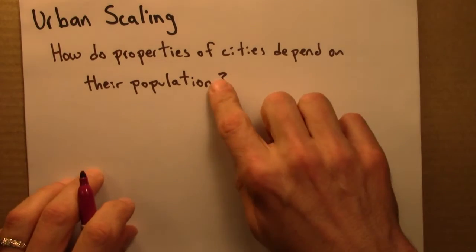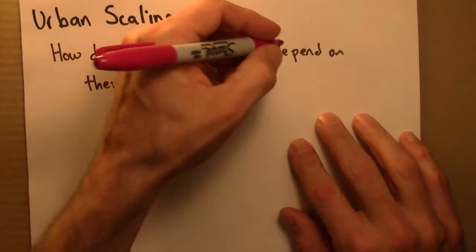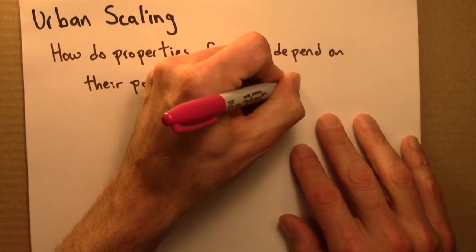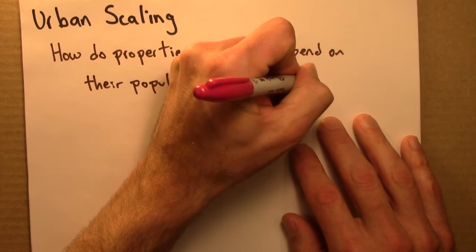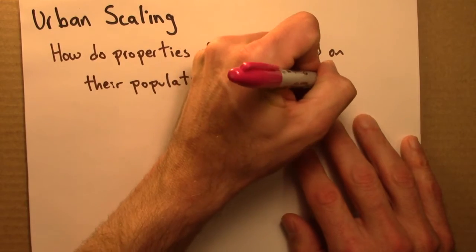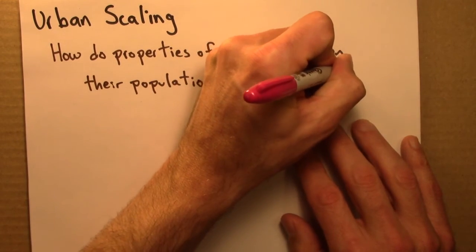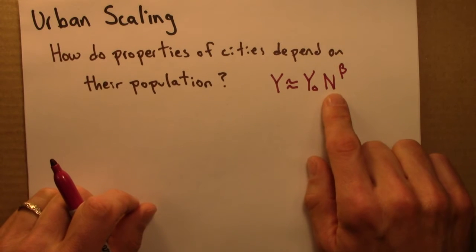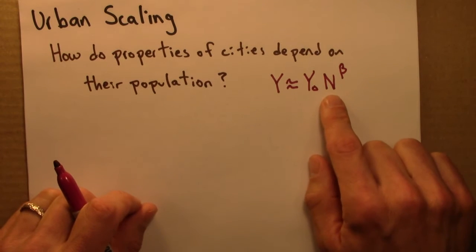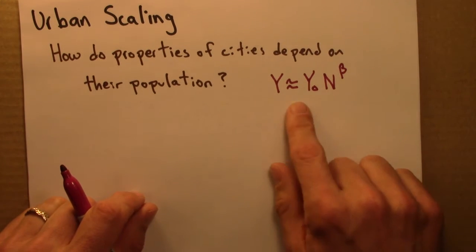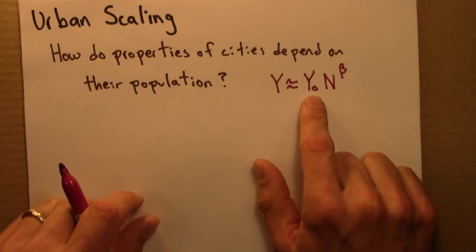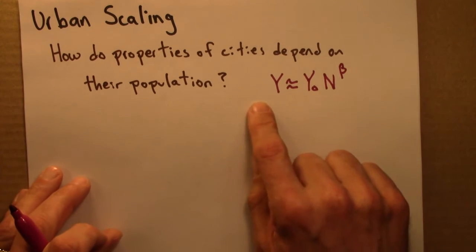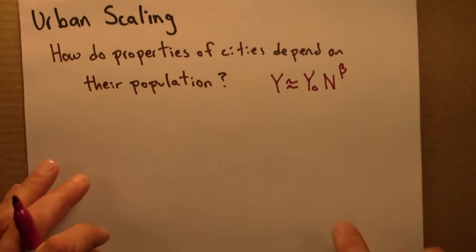So how do properties of cities depend on their population? Well, often they're well described by a power law of this form, where n is the population size and y is whatever we're interested in. In the previous unit it was metabolic rate; now it might be GDP, or length of roads, or something.